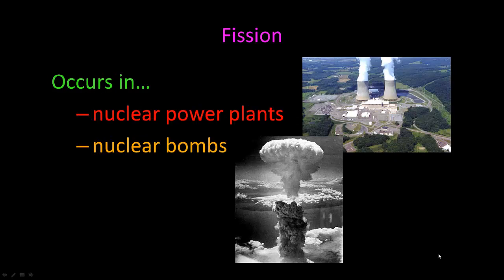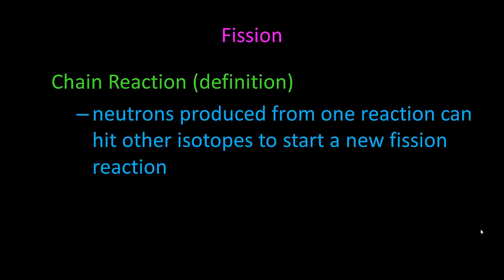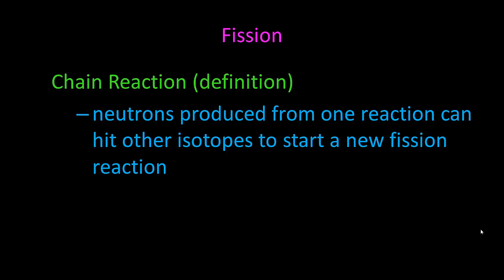Fission occurs in nuclear power plants and nuclear bombs. Fission undergoes a chain reaction, which means that the neutrons that are produced from one reaction can hit other isotopes to start a new fission reaction.